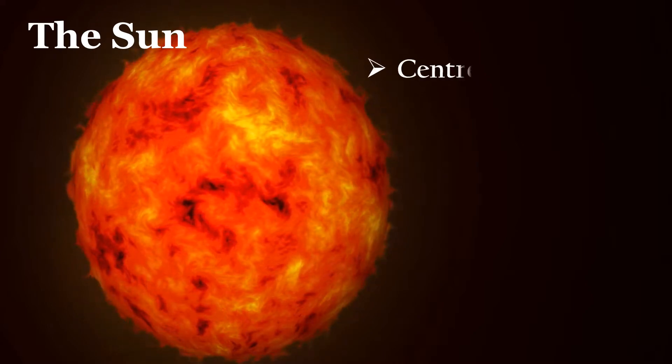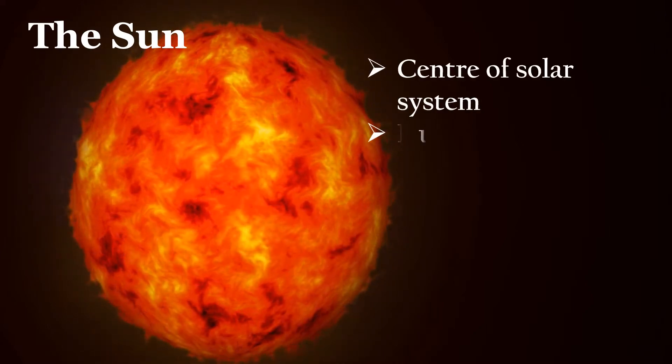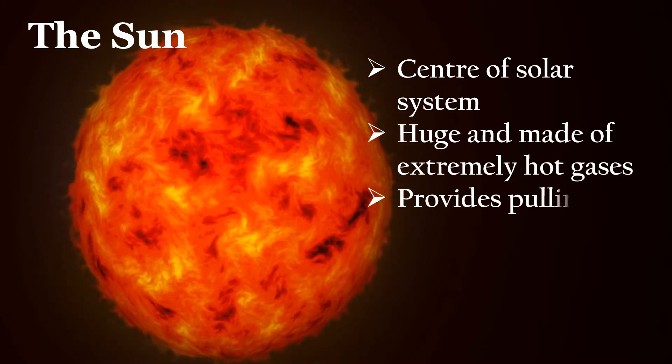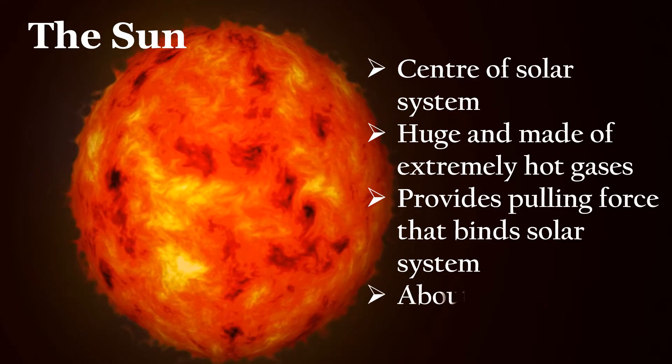The sun is in the center of the solar system. It is huge and made of extremely hot gases. It provides the pulling force that binds the solar system. The sun is about 150 million kilometers away from Earth.